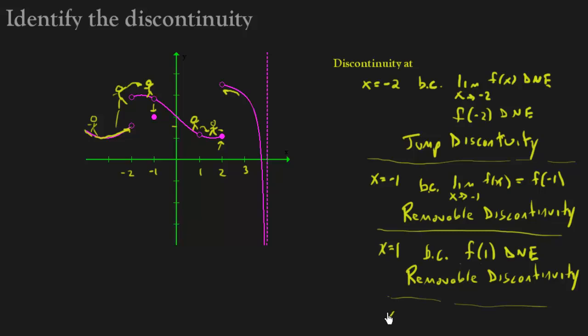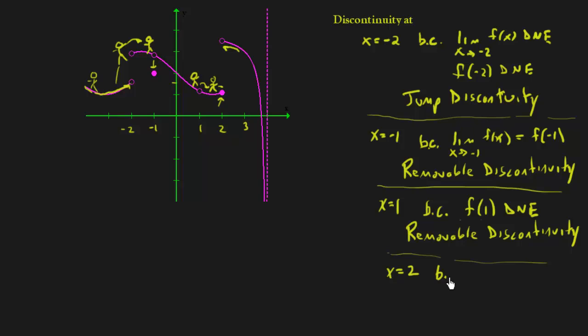So we have a discontinuity at 2. And our reasoning is because the limit doesn't exist again, as x approaches 2. It doesn't exist.